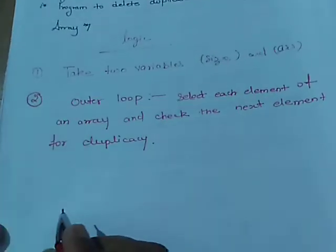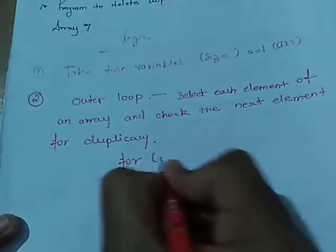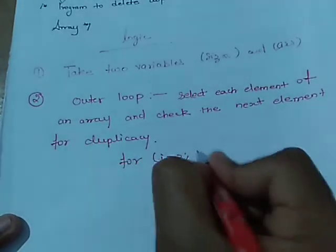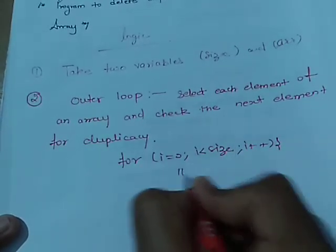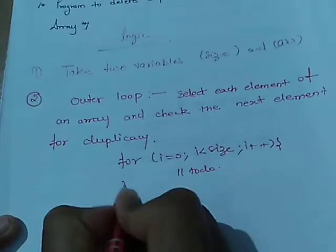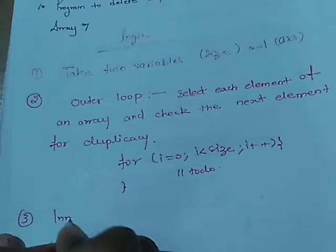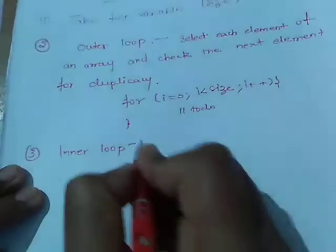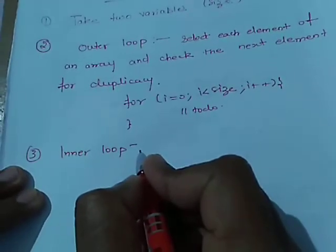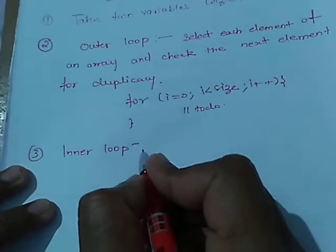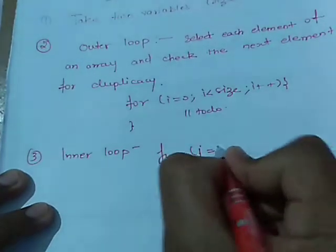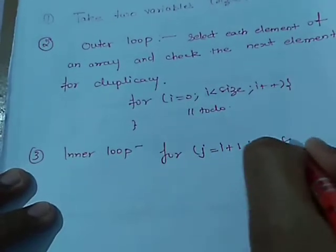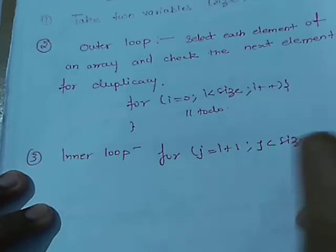The loop structure we have to use is: outer loop — for(i=0; i<size; i++). Inside that we have an inner loop with the structure for(j=i+1; j<size; j++).